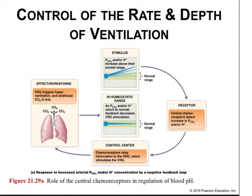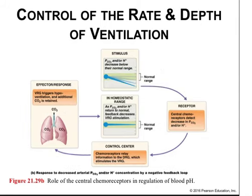Changes in arterial carbon dioxide concentration are the most powerful stimulus inducing classic negative feedback loop responses from central chemoreceptors. High carbon dioxide or proton concentration triggers hyperventilation — the VRG is stimulated, which increases the ventilation rate, lowering carbon dioxide and proton levels and restoring homeostasis. Low carbon dioxide or proton concentrations trigger hypoventilation — the ventral respiratory group is inhibited, decreasing the ventilation rate and increasing CO2 and proton levels, restoring homeostasis.